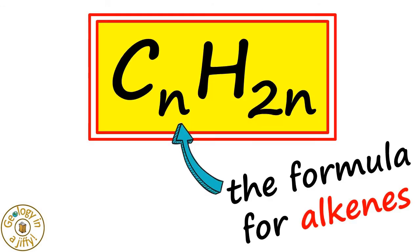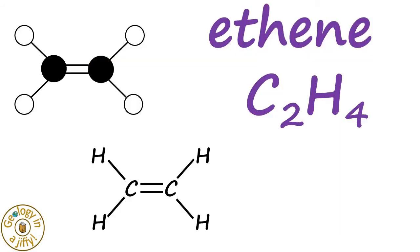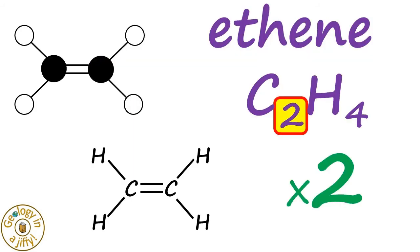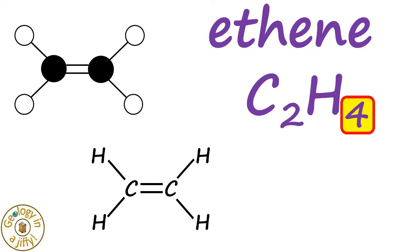If we use the formula for alkenes, we see that ethene has two carbon atoms, so two times two gives us four hydrogen atoms.